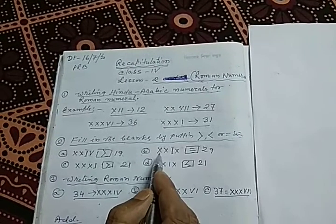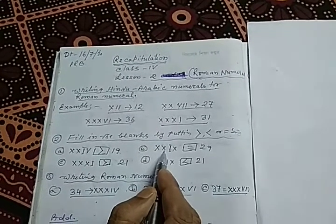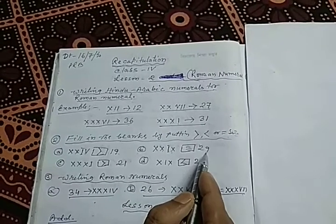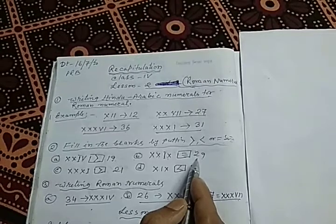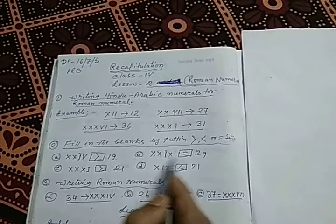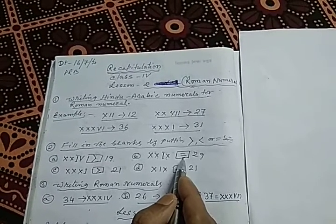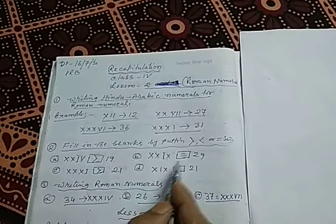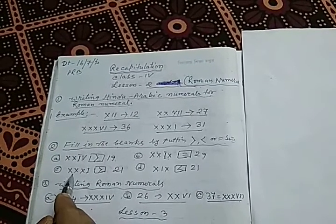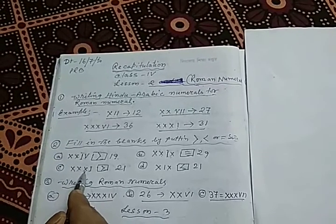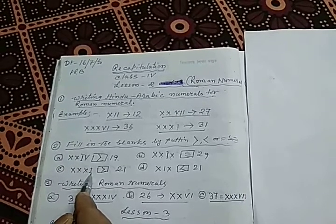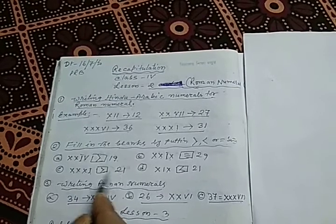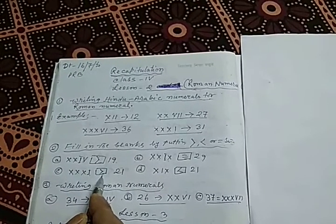In example B, you see 10 plus 10 equals 20, plus 9 equals 29. On the right side in Hindu-Arabic number it is given as 29. These two numbers are equal, that is why the equal sign is to be put in the box. In example C, 10 plus 10 plus 10 equals 30, plus 1 equals 31. Since 31 is greater than 21, the greater than sign is put.